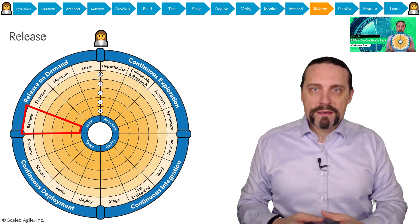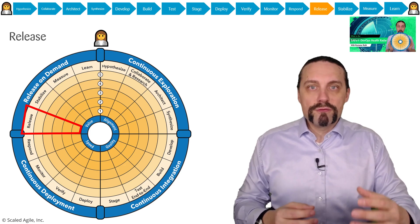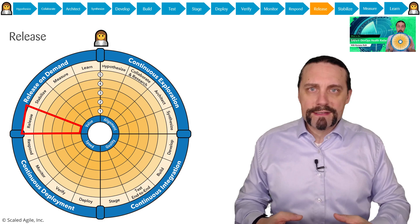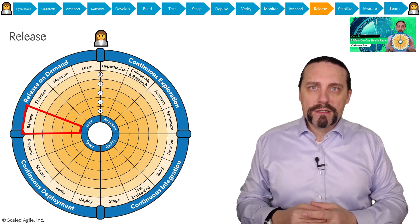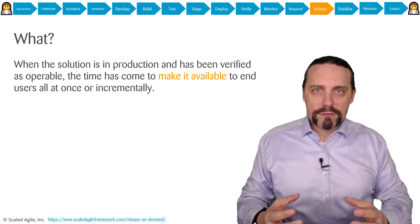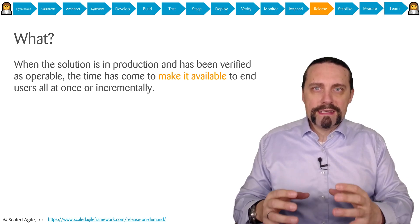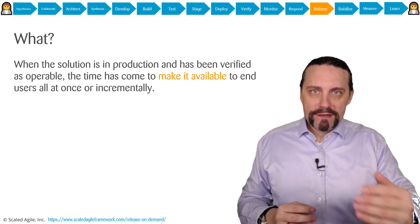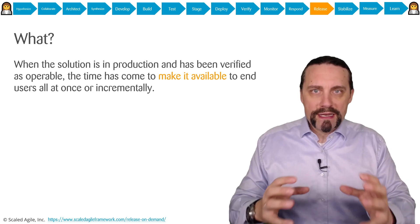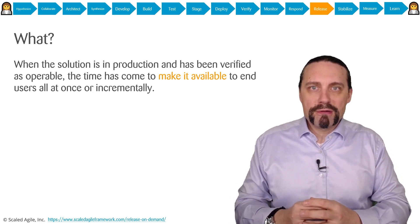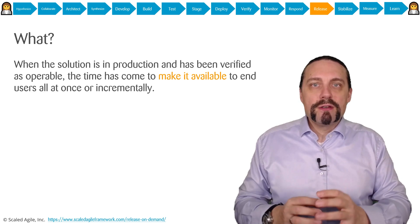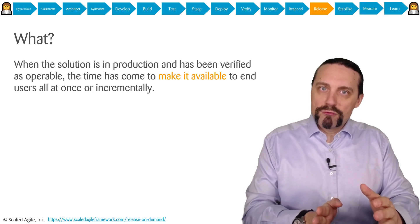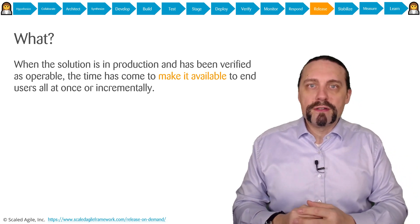We start to monitor our solution, and if something happens in production we respond to those problems. Now we are ready to release. The new functionality is in production, we have verified that everything is okay, monitoring is in place, and now it is time to release the new functionality to a small group of users or to all of the users.